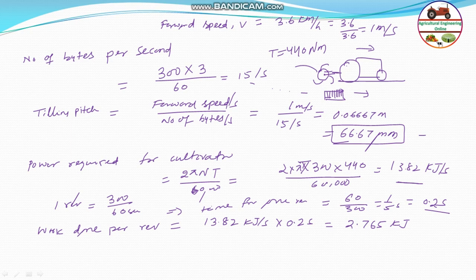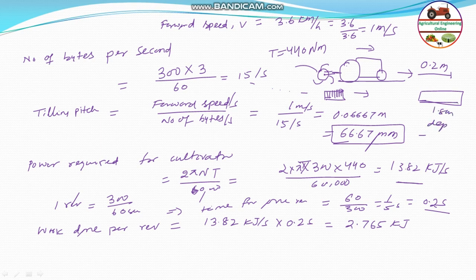Next, we find the forward movement during one revolution. In one second the tractor moves 1 meter, so in 0.2 second there is 0.2 meter of forward movement. The working width of the cultivator is 1.8 meter and the depth is 150 millimeter, which equals 0.15 meter.